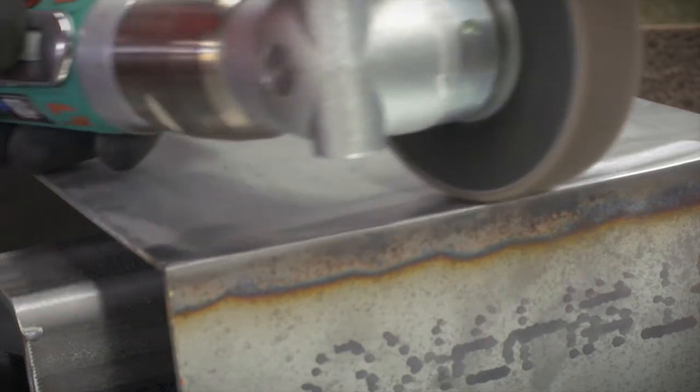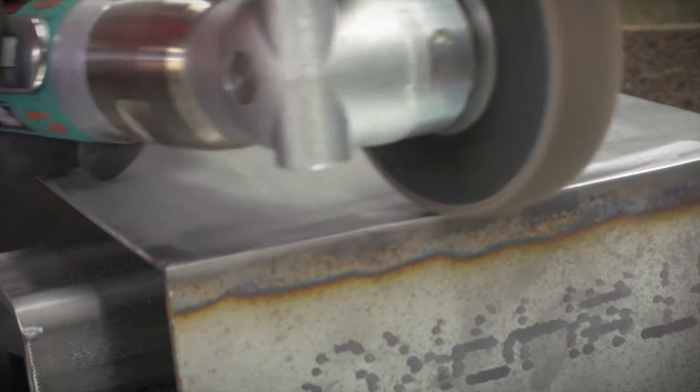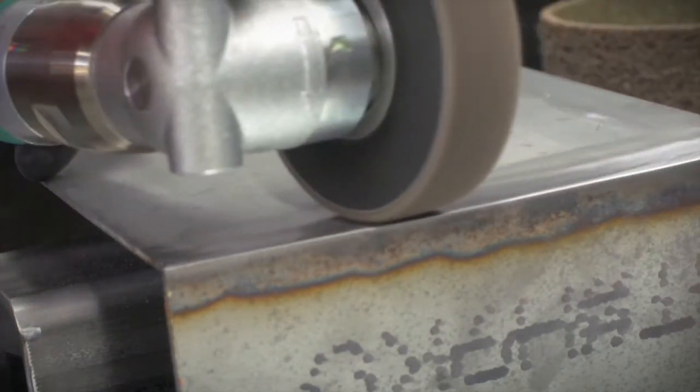The belts come in a variety of grit sizes, including coarse, medium, fine, and very fine.